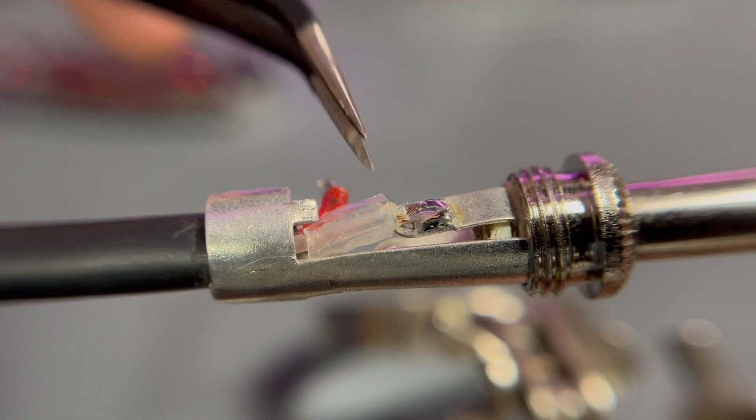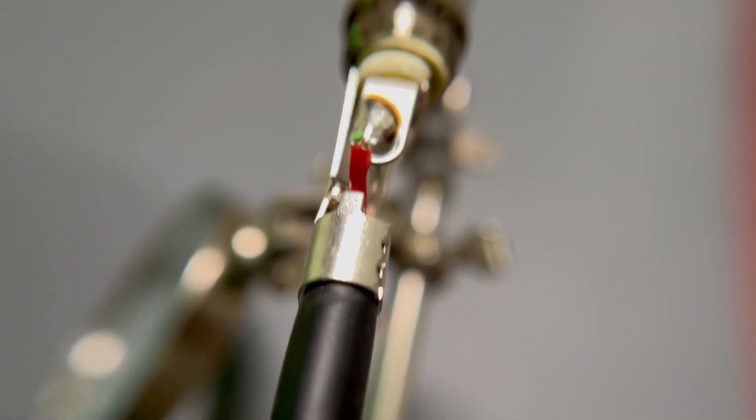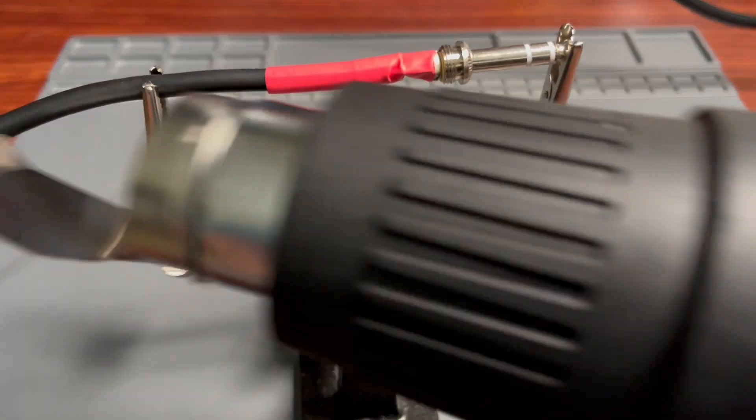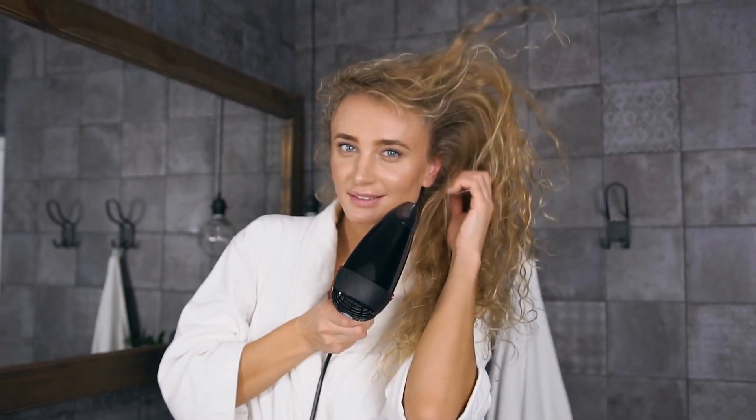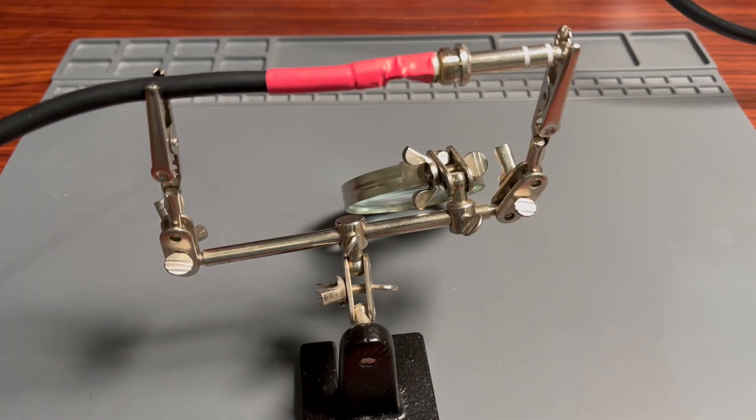To give our connection that extra layer of protection, you can use heat shrink tubing. Slide the tubing over the solder joint and then heat it up with a heat gun. Or even a hair dryer if you're feeling adventurous. The tubing has shrunk and snugly wrapped itself around the connection.